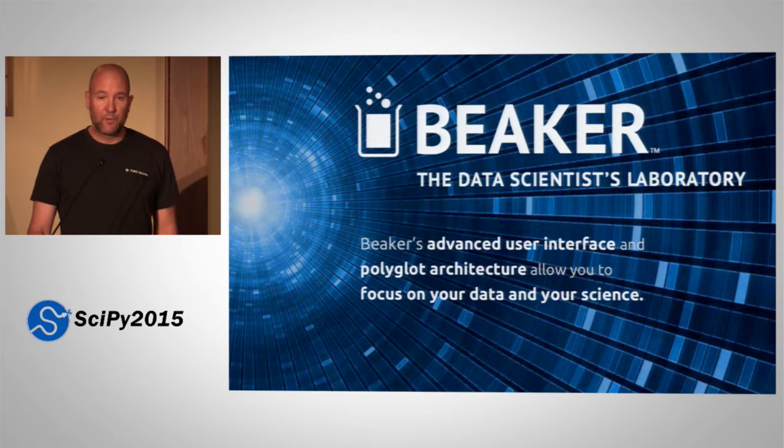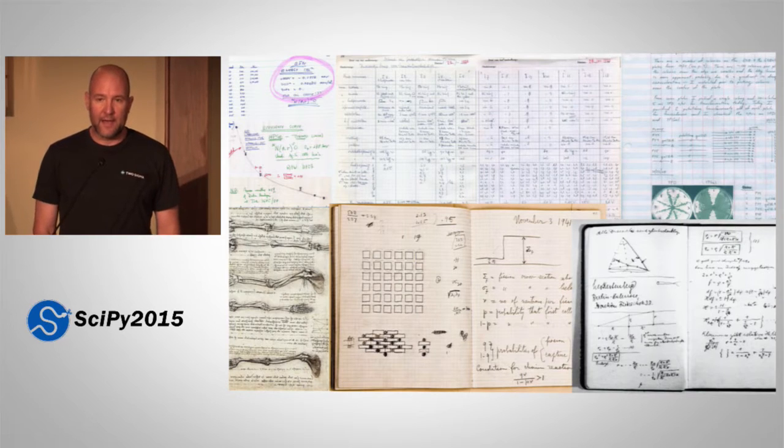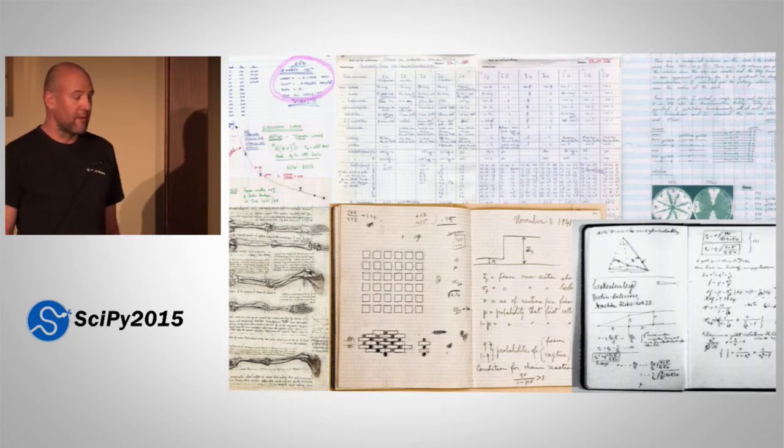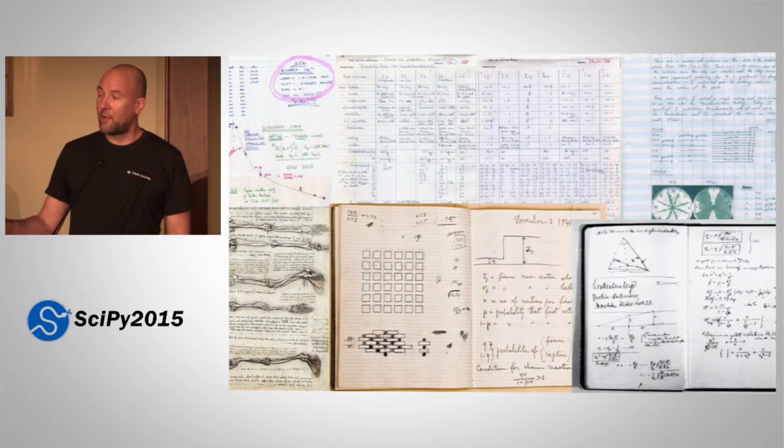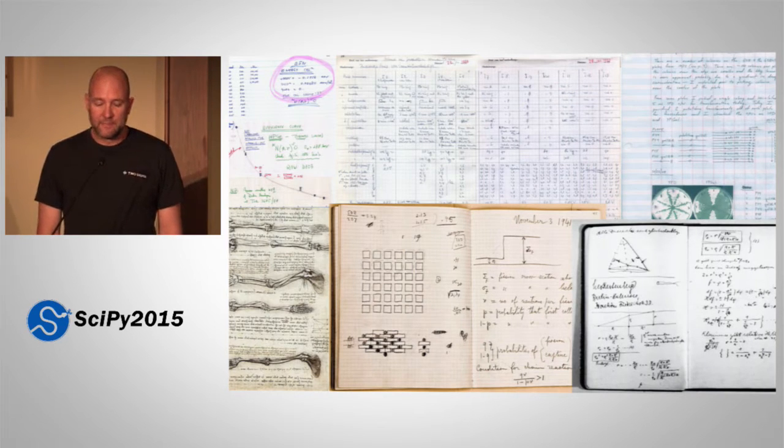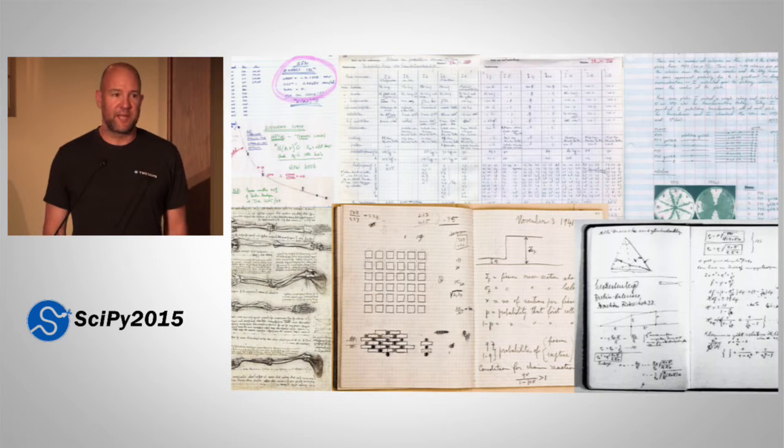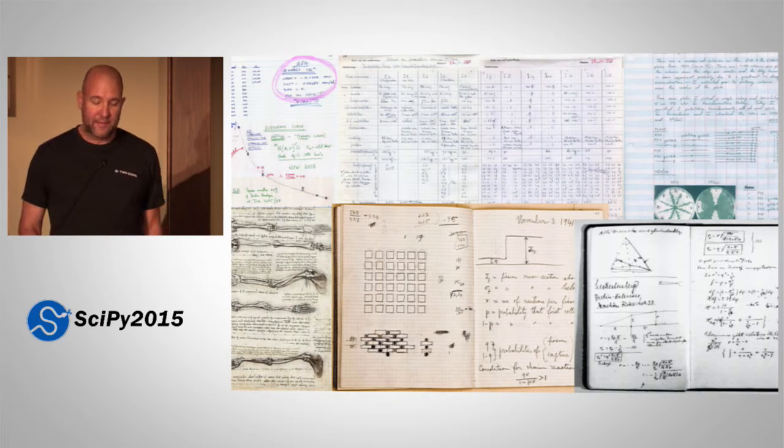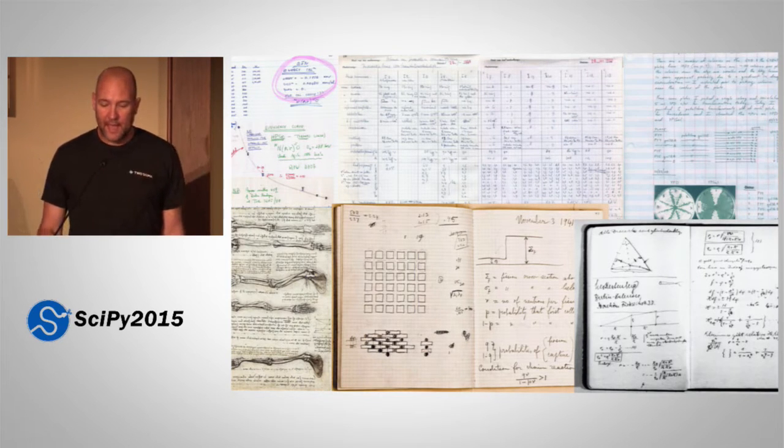But first, let me tell you about notebooks. You might not need that much convincing that notebooks are a good user interface metaphor. Here's some pictures of some historical scientific notebooks. You might recognize the one in the lower left with the anatomical drawings by Leonardo and the one in the lower right by Albert Einstein. In fact, the idea of a notebook and recording data in writing is practically the foundation of science. And there's all kinds of things that go into a notebook. Data, images, sketches, prose, ideas, coffee stains, and all the sort of detritus of a scientist's life.